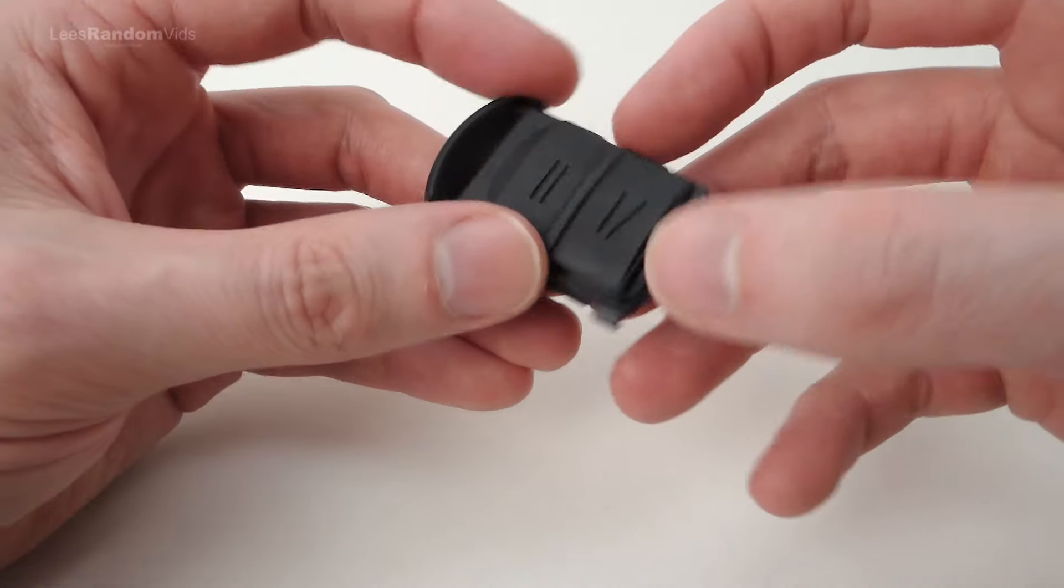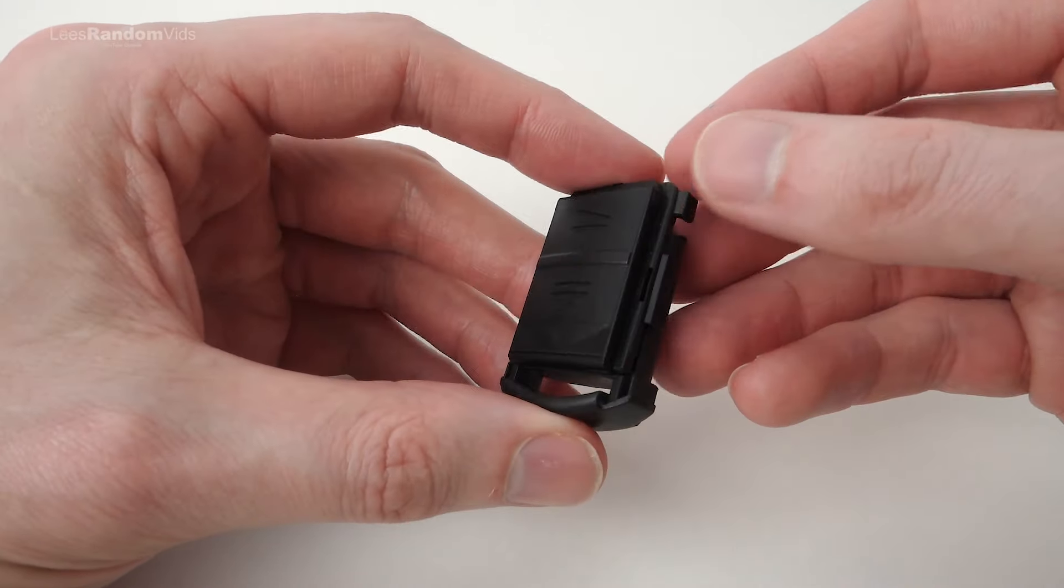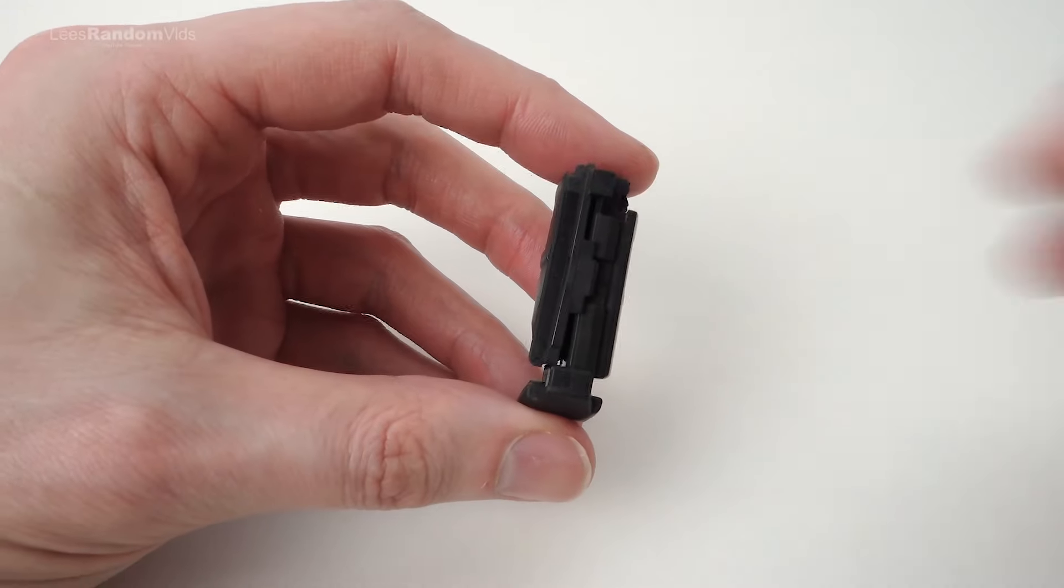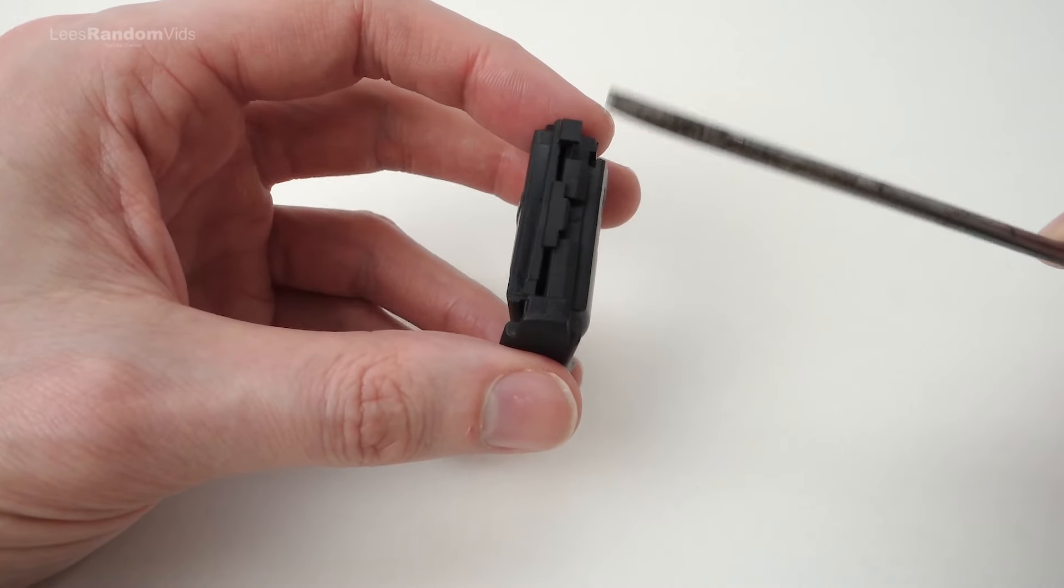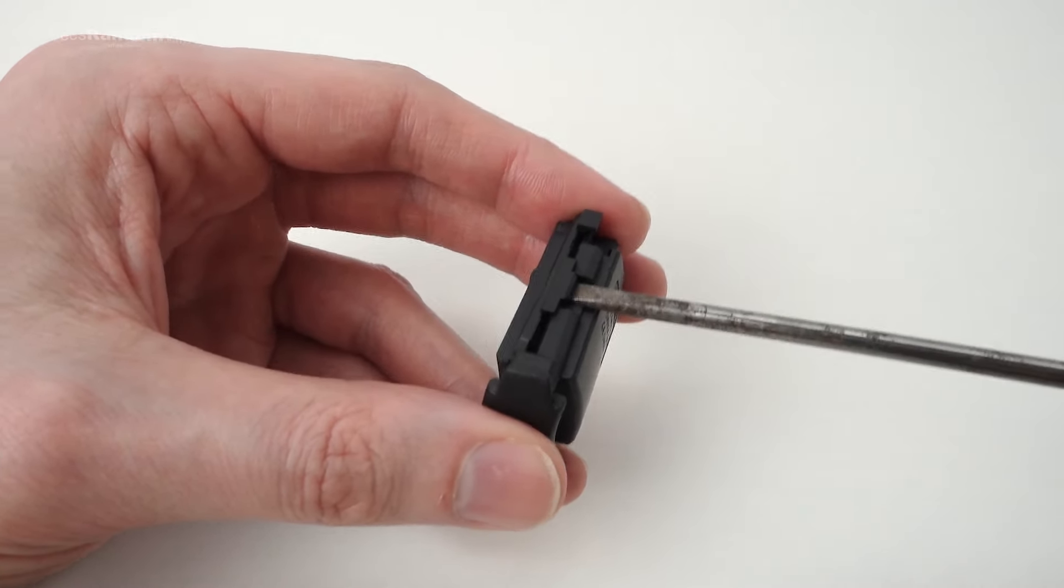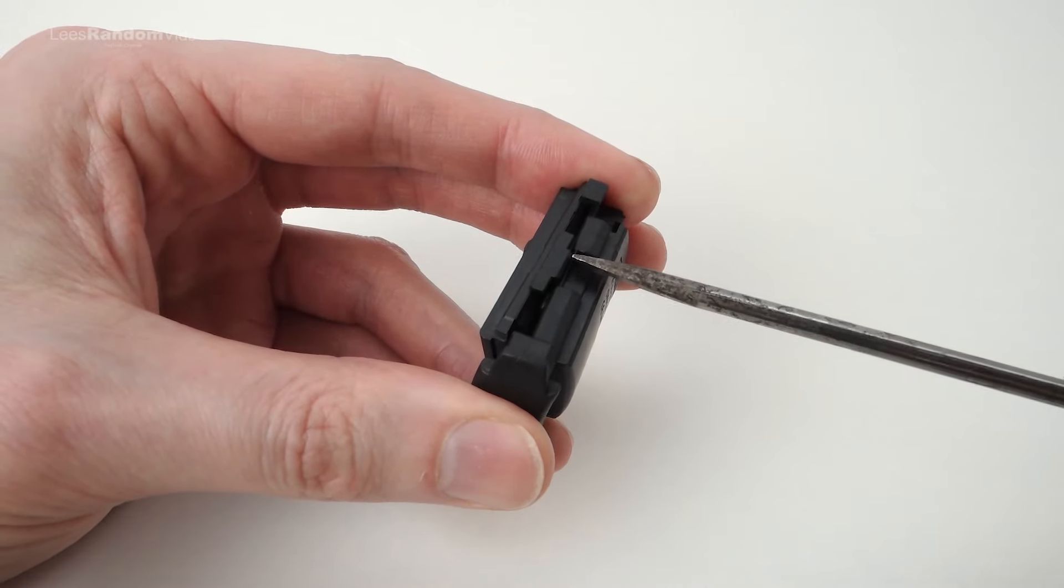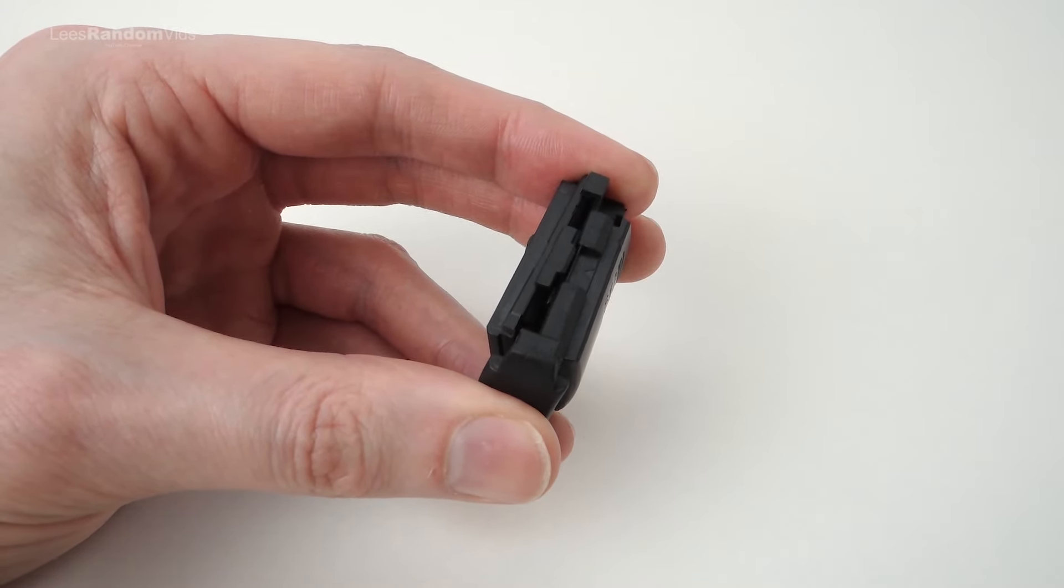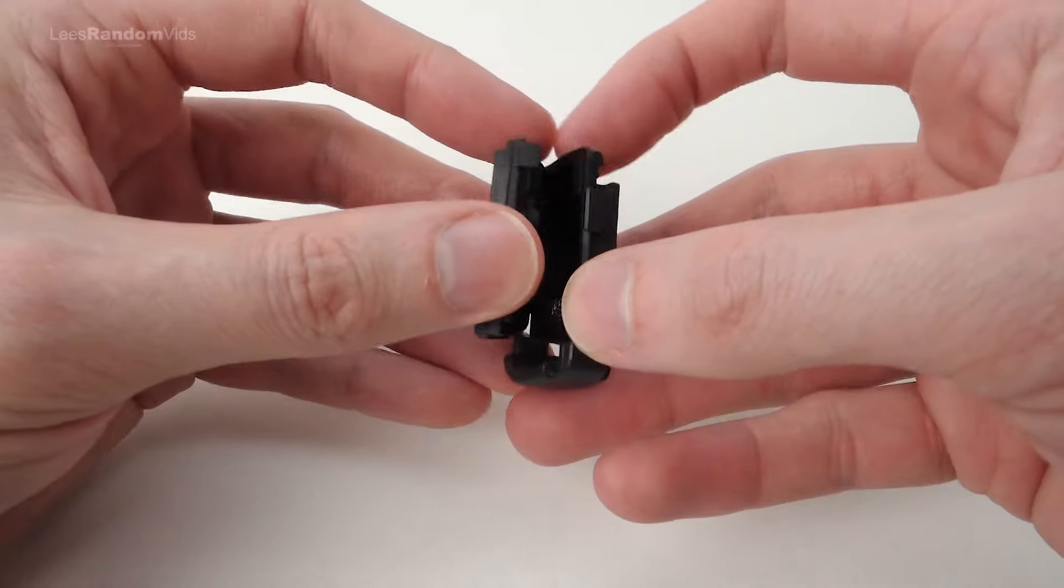Now we have the middle section out, we need to open it up to get to the battery compartment. Hold it between your thumb and finger like this, and on the side with just one clip, insert the end of the screwdriver under that clip and gently twist the screwdriver to open the case. Then gently separate the two halves of the case.